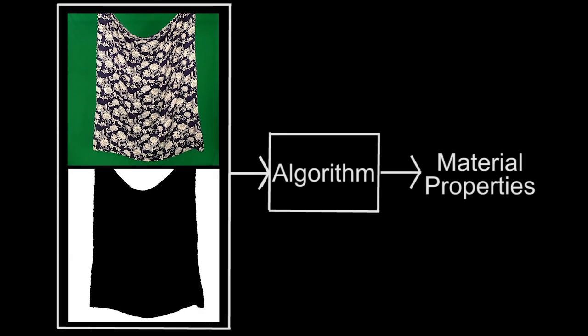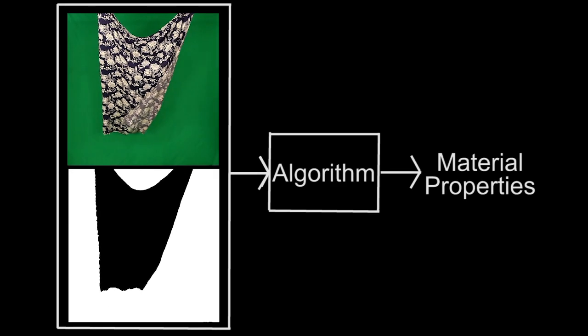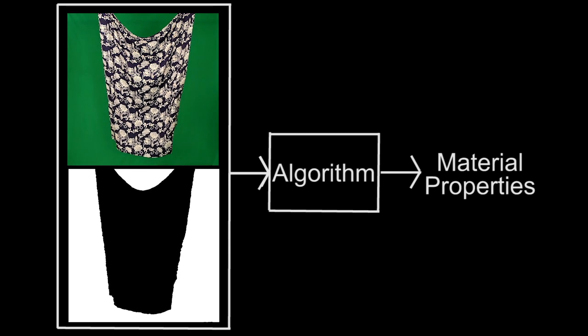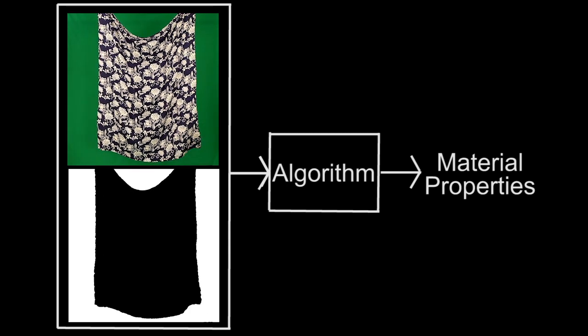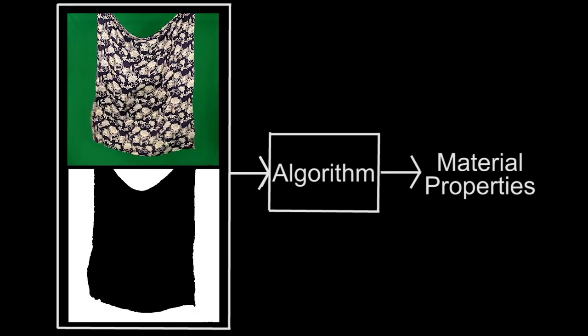The input to our system is a video of a previously unseen fabric moving along with a mask of which pixels contain the fabric in every frame. The output is a value indicating the fabric's stiffness or area weight.